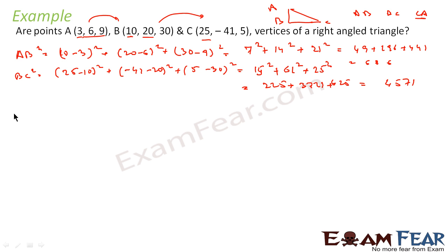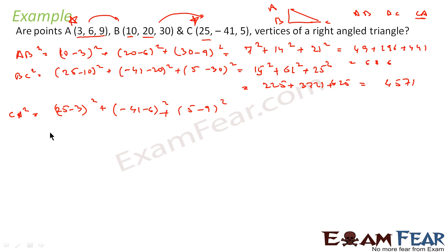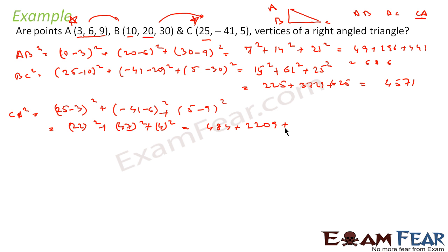Similarly, we will find CA². That comes out to be (25 minus 3)² plus (minus 41 minus 6)² plus (5 minus 9)². That value is 22² plus 47² plus 4², which is 484 plus 2209 plus 16, so this value is 2709.